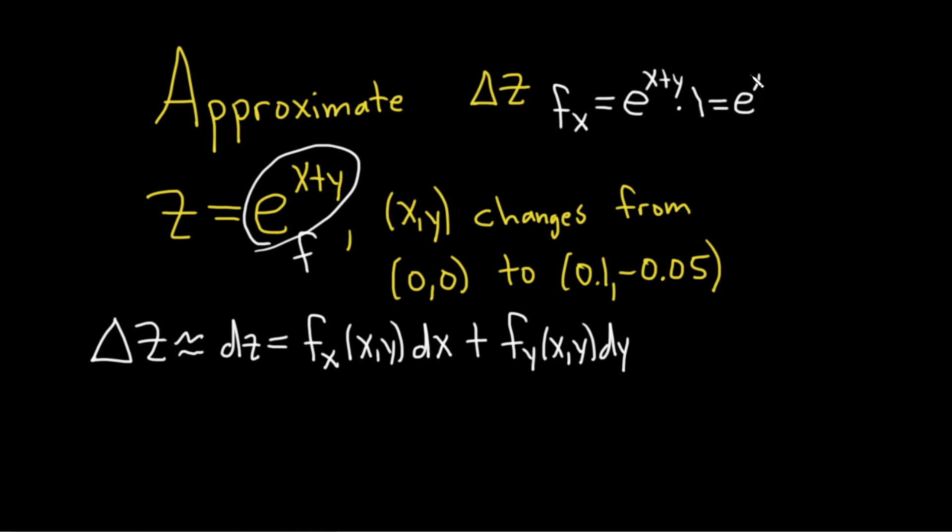Again, y is a constant when we're computing a partial with respect to x. That's why its derivative is 0. Likewise, fy is the partial with respect to y. Same thing. We take the derivative of the outside, leave the inside untouched, times the derivative of the inside. Because we're computing the partial with respect to y, the derivative of x is 0 and the derivative of y is 1. So this is e to the (x+y).